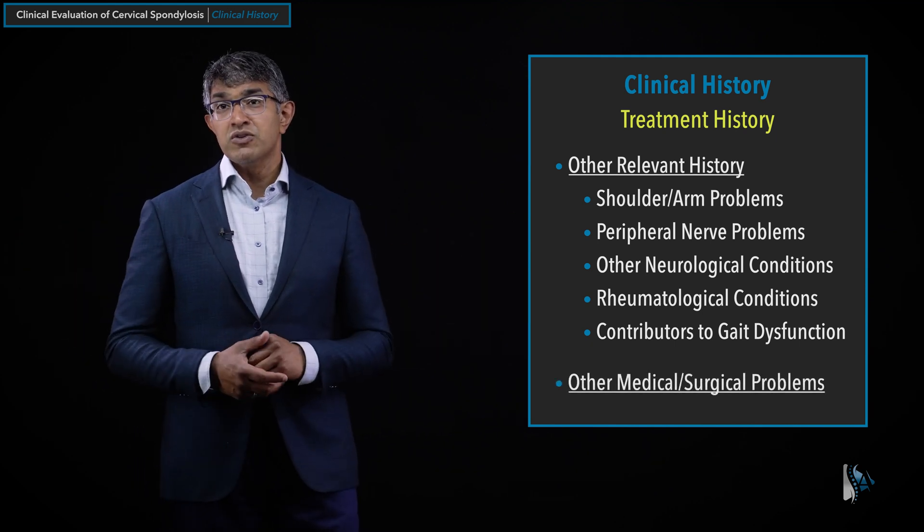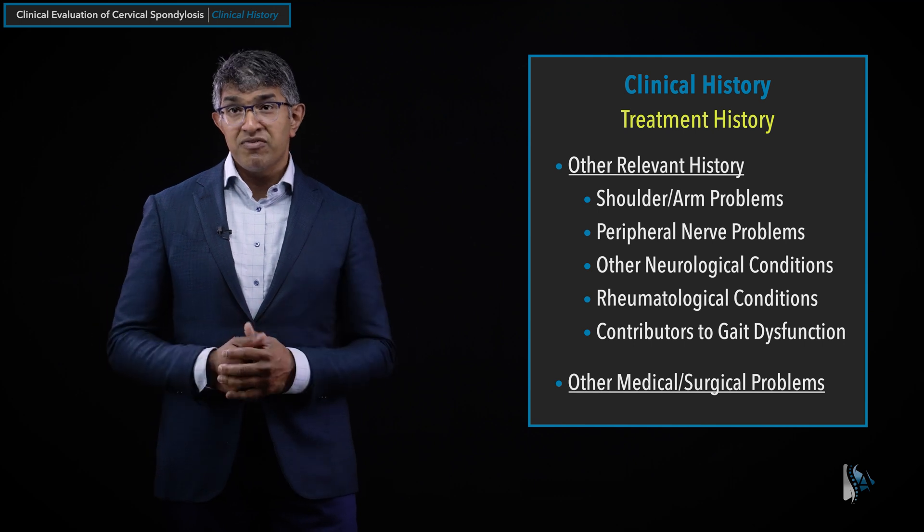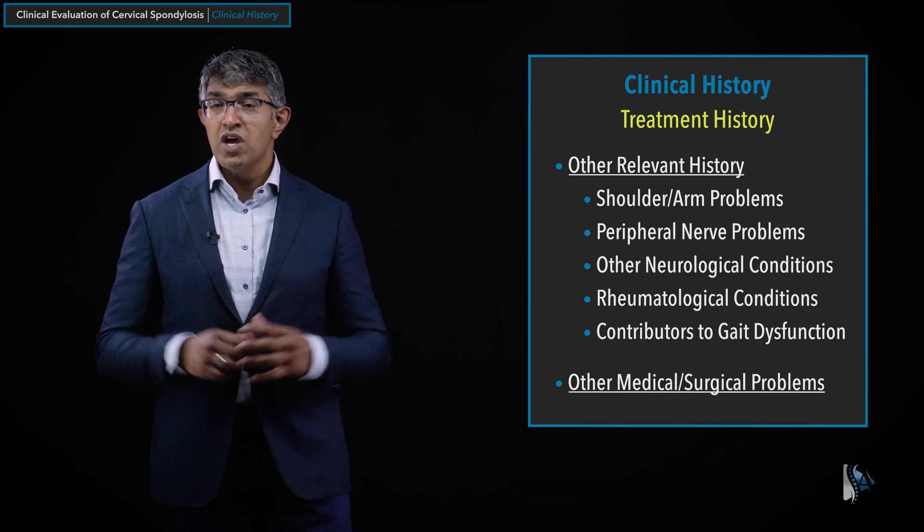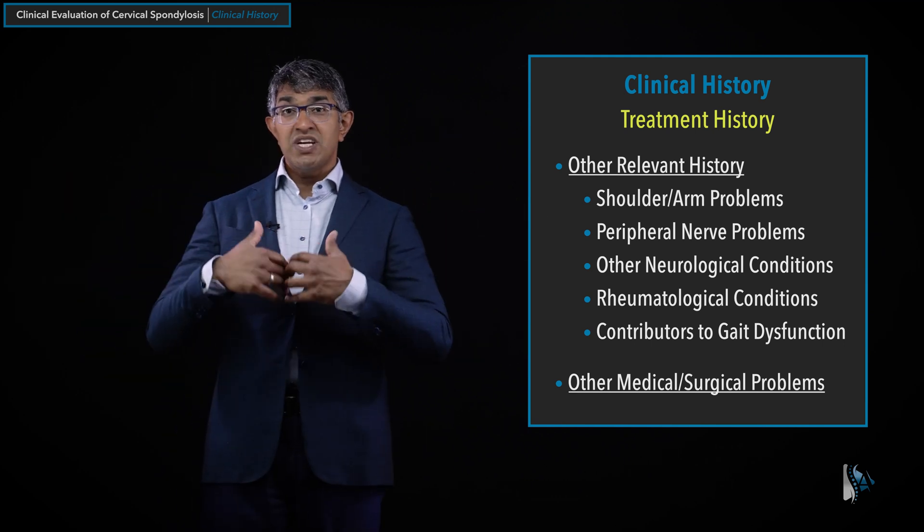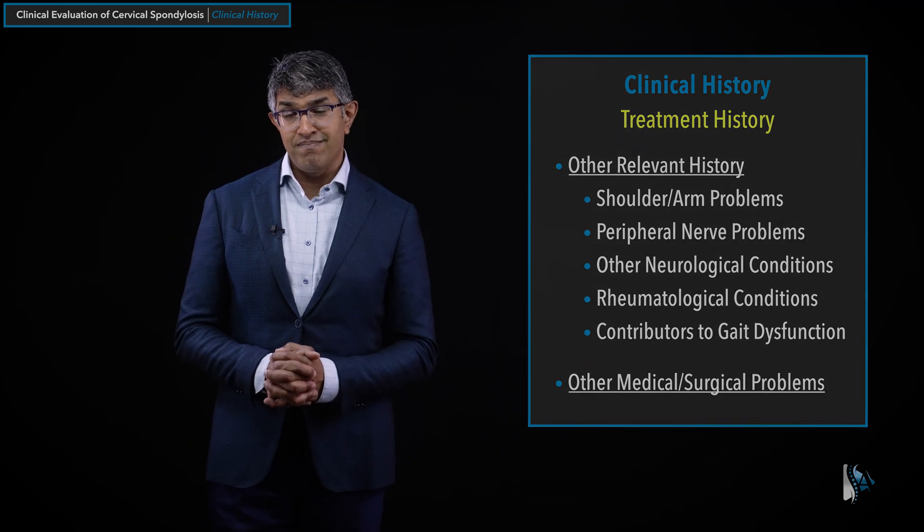Finally, other medical and surgical problems that may affect their neurological condition all go into good history taking for the cervical spine. This lays the foundation for a meaningful physical exam, ancillary tests, and an intelligent review of imaging — putting together a full composite understanding of what a patient's symptoms are, where they may be coming from, and developing a powerful, meaningful management plan that may or may not involve surgery.